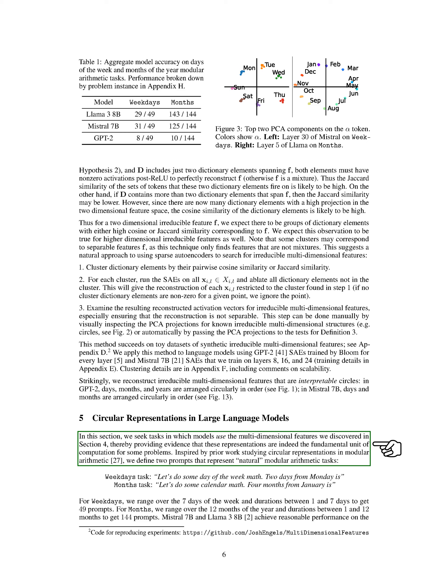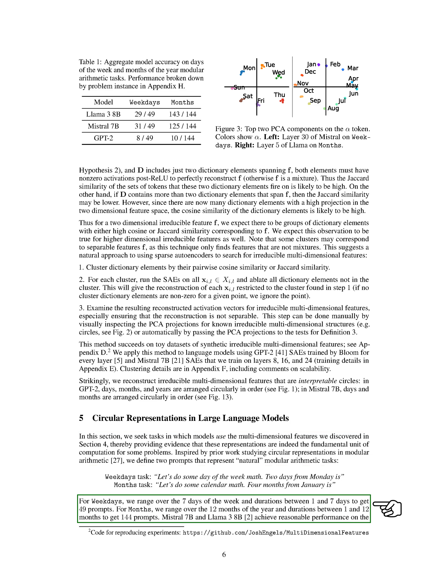We explore tasks where models utilize the multidimensional features identified earlier, helping demonstrate that these representations are crucial for certain problems. Drawing inspiration from previous studies on circular representations in modular arithmetic, we create two prompts that reflect common modular arithmetic tasks: the weekdays task and the months task. For the weekdays task, we consider the 7 days of the week and durations ranging from 1 to 7 days, resulting in 49 prompts. Similarly, for the months task, we consider the 12 months of the year and durations ranging from 1 to 12 months, leading to 144 prompts.